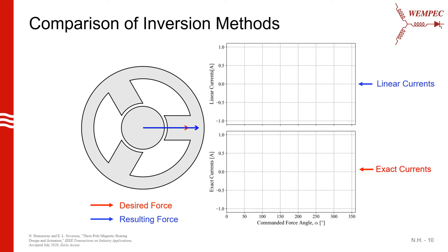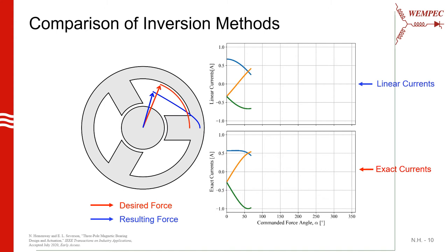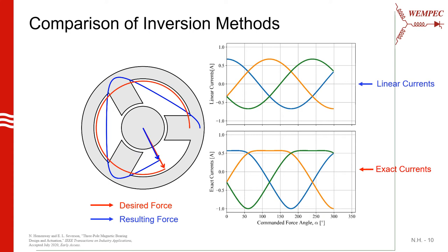Here I have an animation that compares both the linear and exact current inversion methods. On the left, we'll watch the red, desired force vector rotate through all of the force angles. The exact current inversion method will be able to produce this desired force exactly. The blue force vector is the force vector that results from using the simple linearized force model. On the right, we'll see the current waveforms that result using both inversion methods. At some points, you can see that the force resulting from the linear model leads the desired force, and at other points it lags. We can also see that the current waveforms that result from the exact inversion method contain significantly more harmonic content.